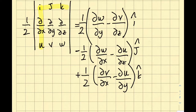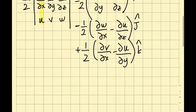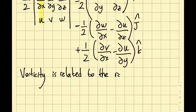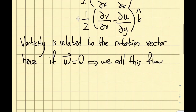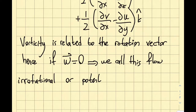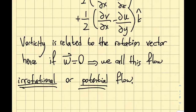Now I'll make the physical connection of vorticity. Vorticity is related to the rotation vector — not the same, but related. Hence if the vorticity omega equals zero, we call this flow irrotational or potential flow. These two terminologies are important: the vorticity is related to rotation, and if rotation is zero, it makes sense to call it irrotational.